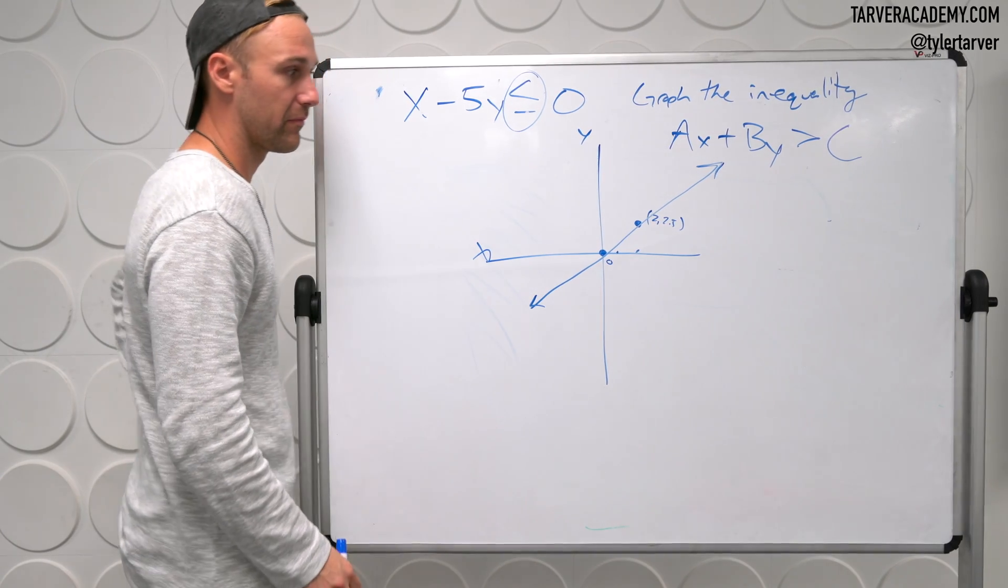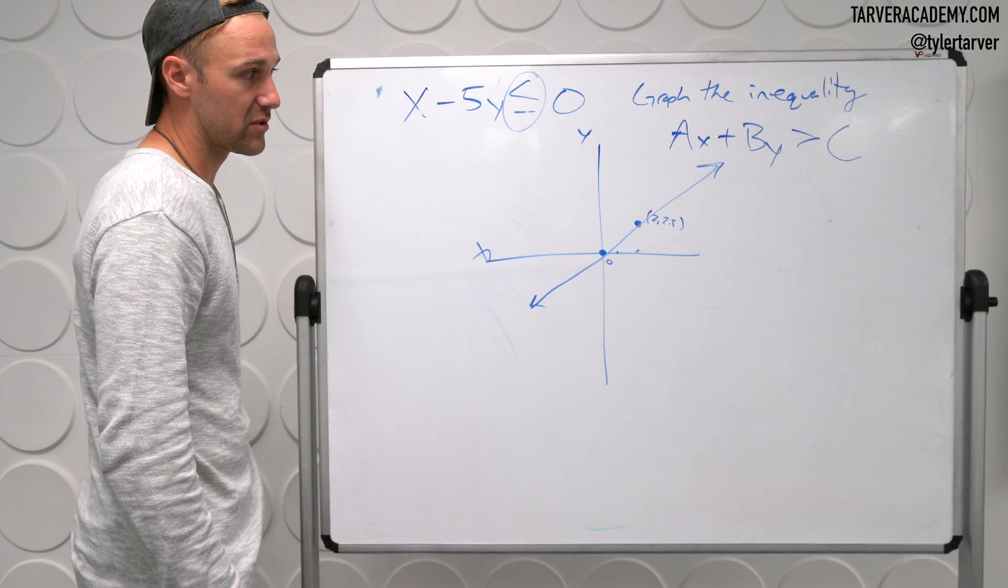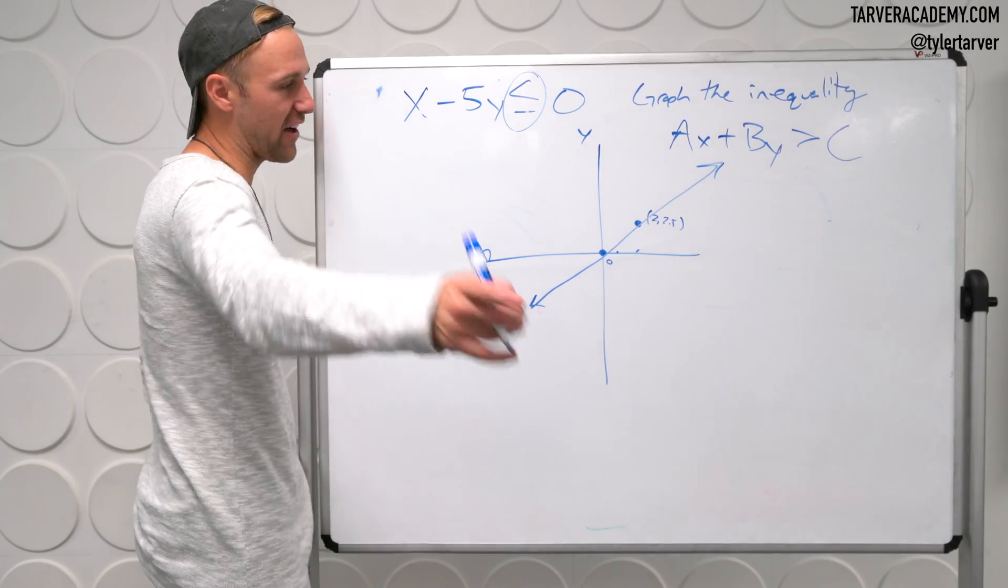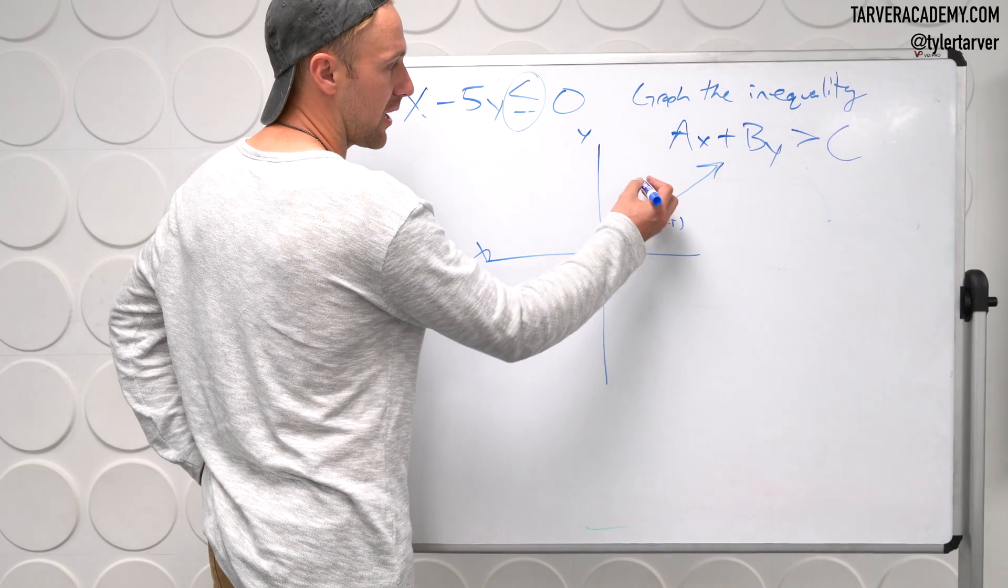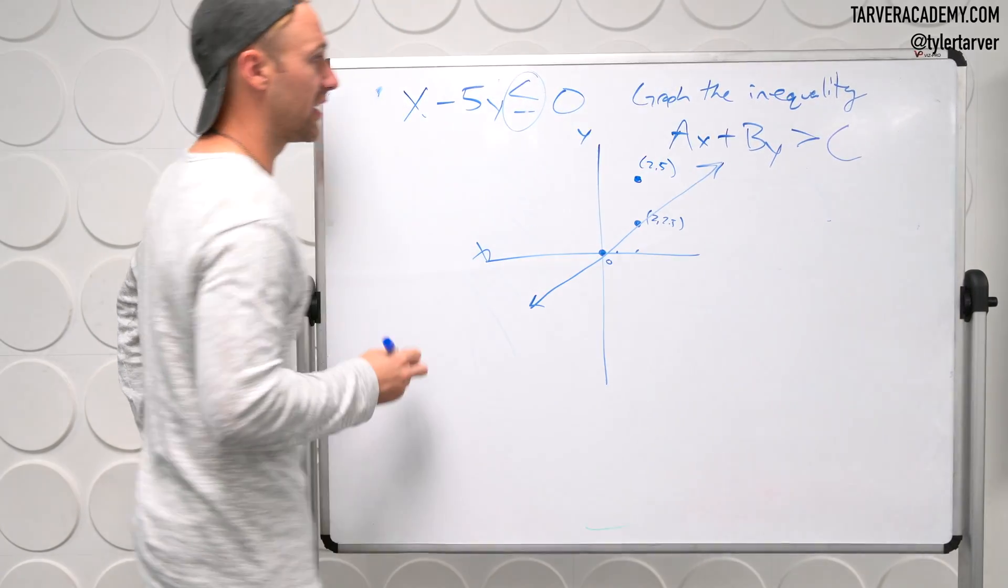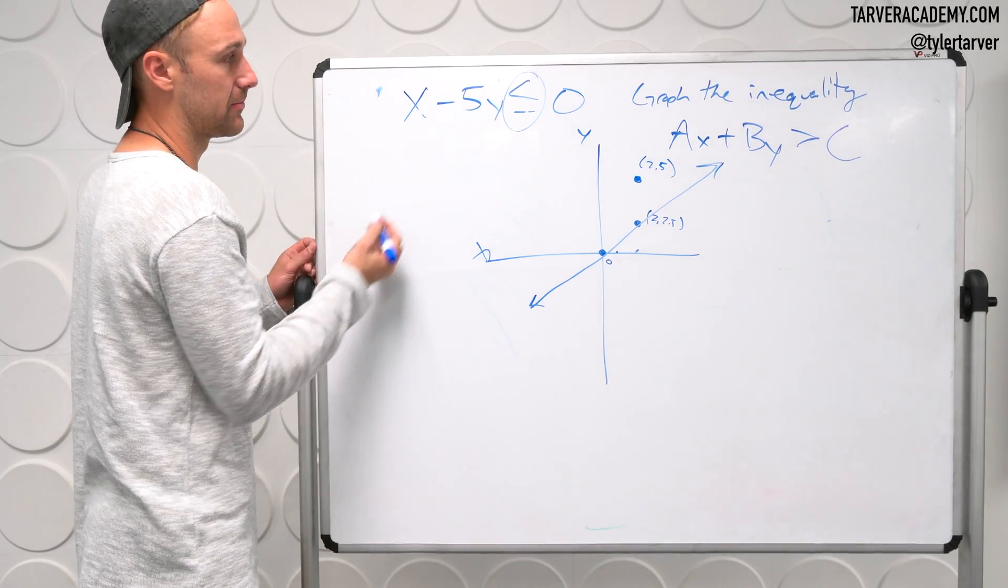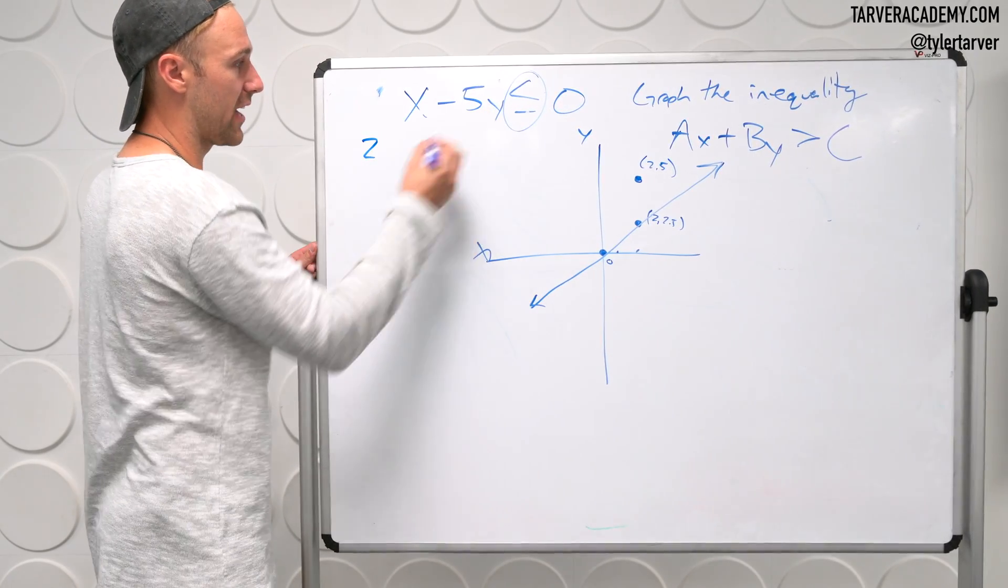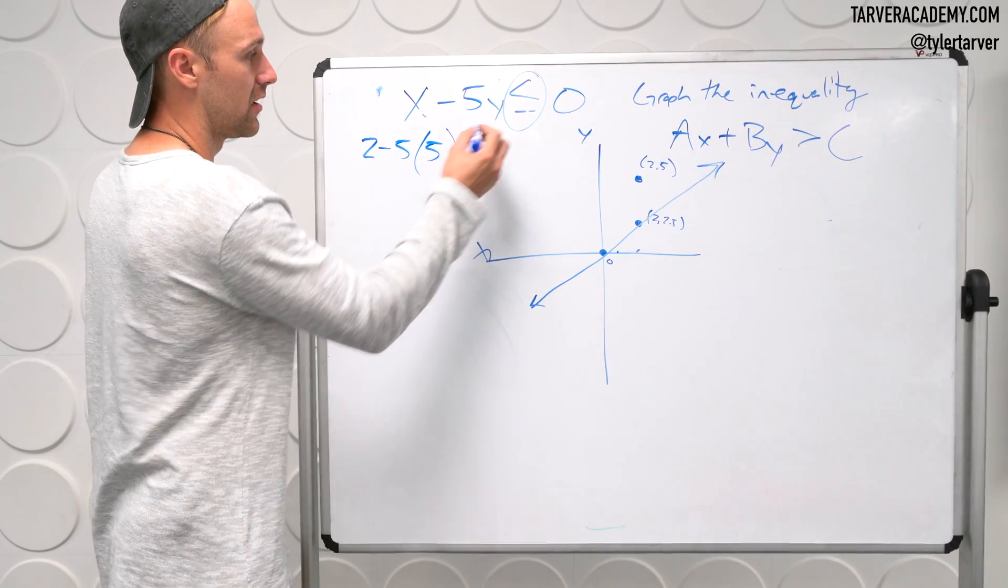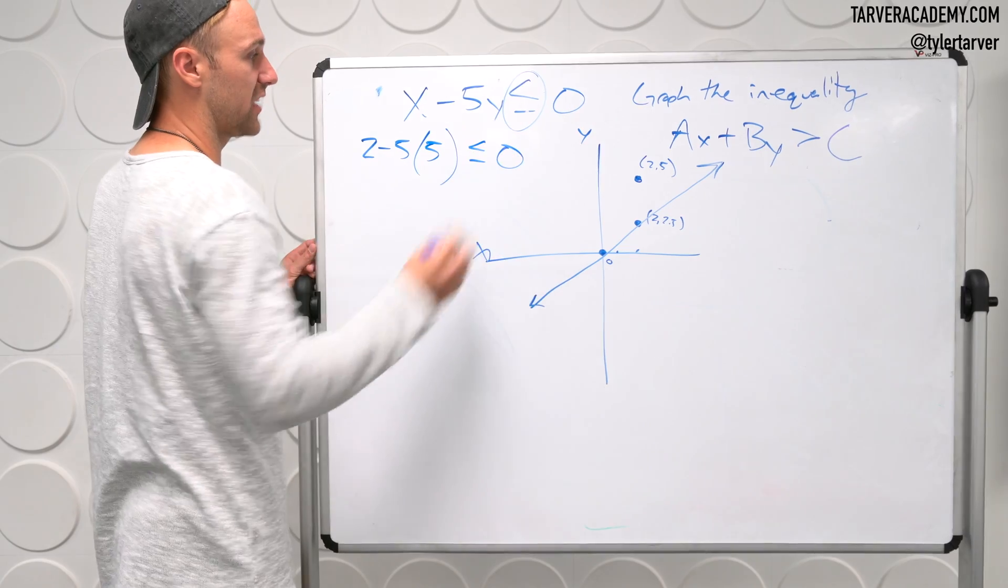So we need to pick a coordinate that is either over here or over here. What coordinate do you guys want to pick? 2, 2. 2, 2 or 2, 5? You said 2, 5 first. We'll go with that. So we're going to go over 2, up 5, right? So let's plug those in. What goes in for x? 2. Minus 5 times what? 5. 5 is less than or equal to 0.